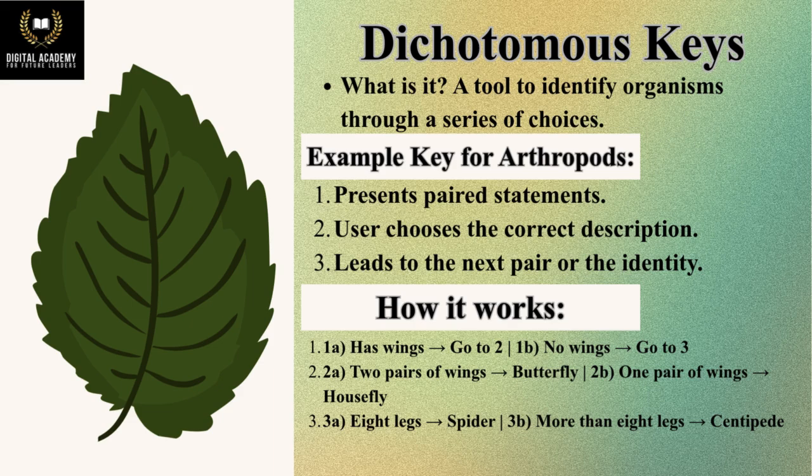Dichotomous keys: a tool to identify organisms through a series of choices. Example key for arthropods – presents paired statements; user chooses the correct description which leads to the next pair or the organism's identity. Example: 1A has wings → go to 2; 1B no wings → go to 3; 2A two pairs of wings → Butterfly; 2B one pair of wings → Housefly; 3A eight legs → Spider; 3B more than eight legs → Centipede.